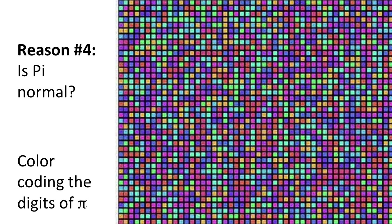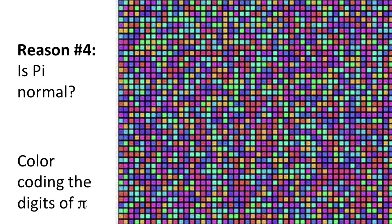Reason four for having many digits of pi? It provides evidence that pi is normal. A number is normal if any string of digits appears with the expected frequency.